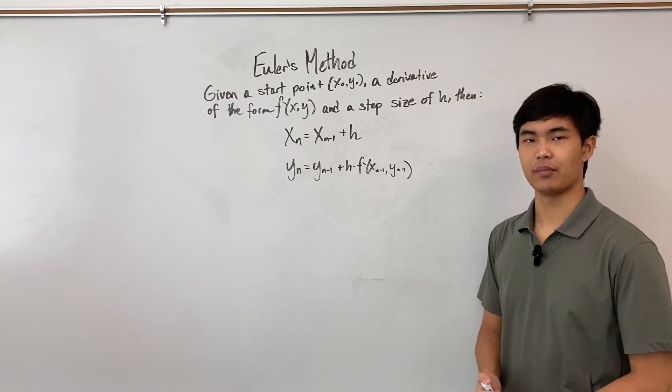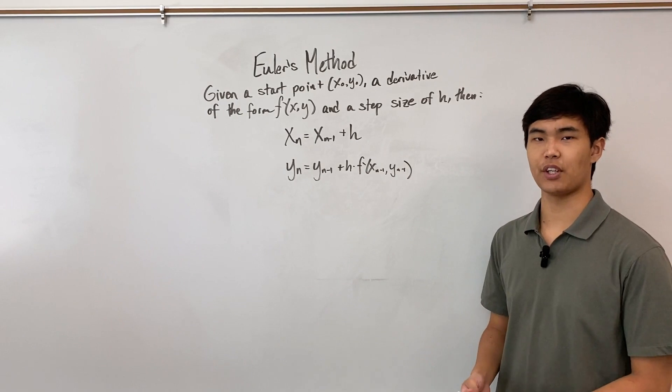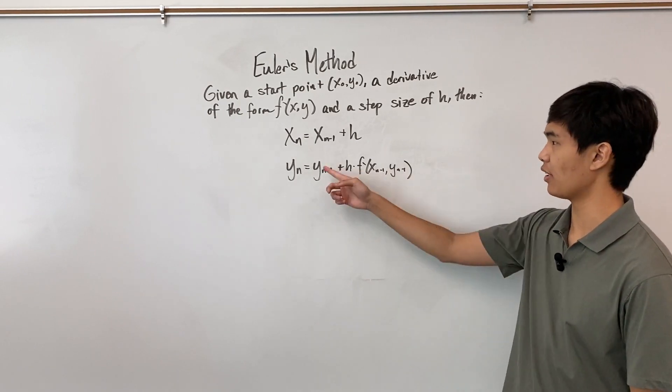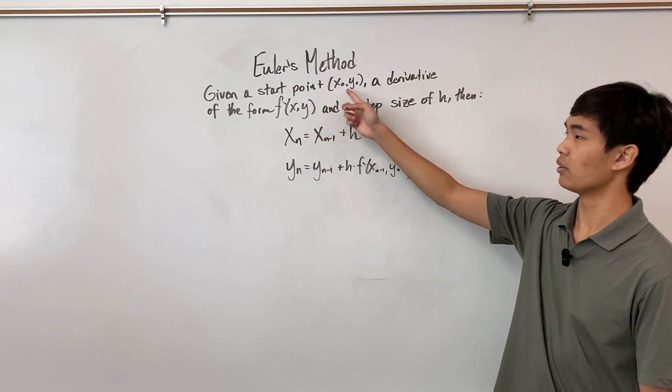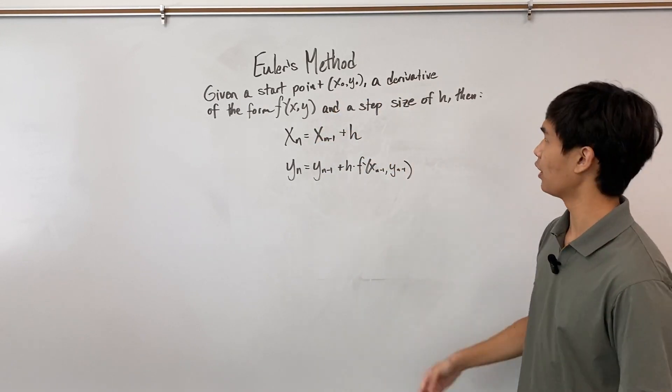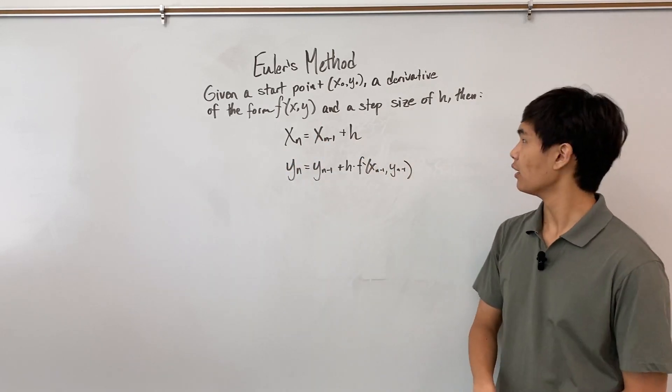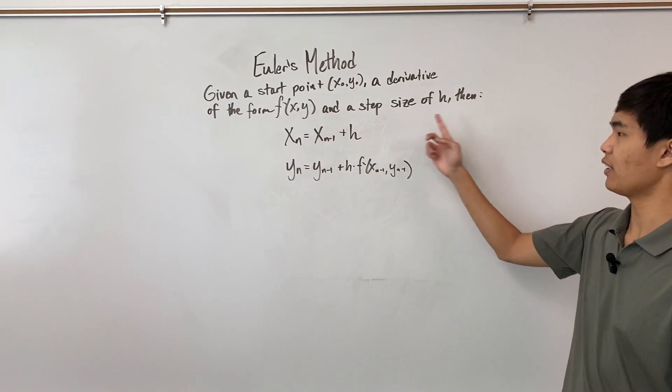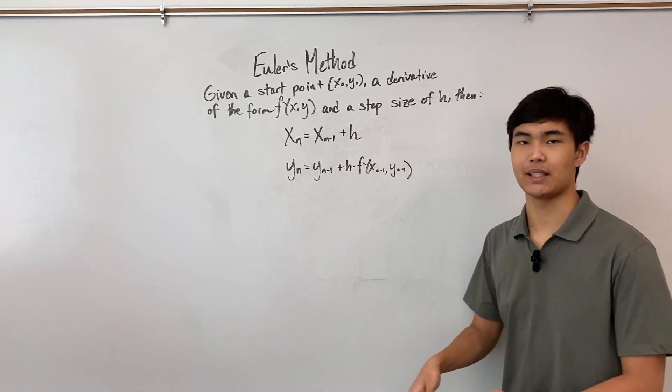Now you arrive at Euler's method. So Euler's method is a way to approximate the solution of differential equations using a recursive method outlined by the following rules. Given a start point (x₀, y₀), a derivative of the form f'(x,y), and a step size of h, then we have these rules. That's probably a lot, but we're going to break it down step by step.